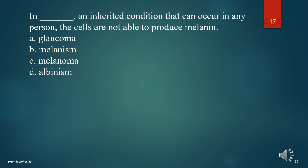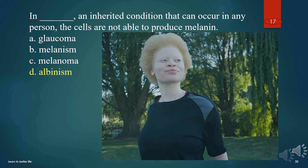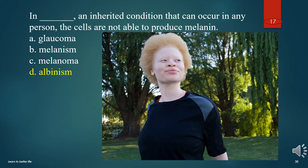In what, an inherited condition that can occur in any person, are the cells not able to produce melanin? A. Glaucoma. B. Melanism. C. Melanoma. D. Albinism. The answer is D. Albinism.